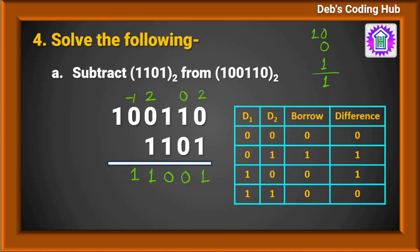To verify, we can calculate the decimal equivalent of the binary numbers and then check. The decimal of the first number 100110: counting positions 0 through 5, 2 to the power 5 is 32. Then 2 to the power 2 is 4, giving 32 plus 4 equals 36. Then 2 to the power 1 is 2, so 36 plus 2 is 38. And the last 1 is 2 to the power 0.